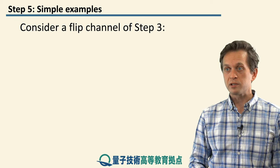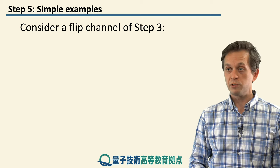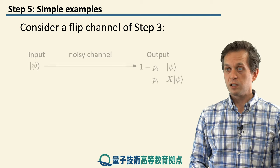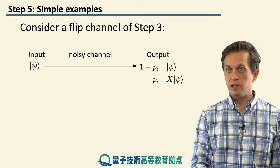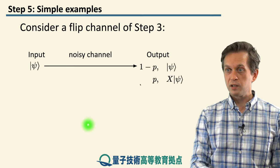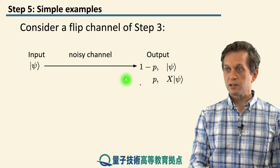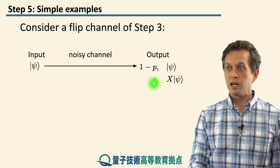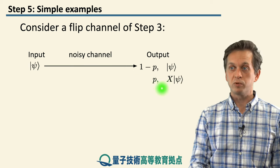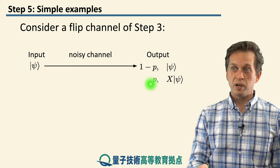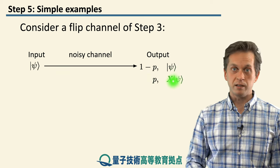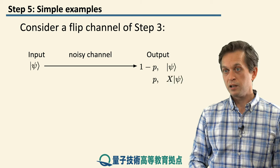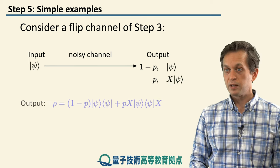Now let's go back and consider our flip channel, which we introduced in step 3. So just to remind you, this is a very simple channel, and what happens is that the input state psi changes with some probability into this state. We apply the Pauli-X operator to it, and with the remaining probability of 1 minus p, actually nothing happens to it. We apply the identity operator, and we get the input state out.